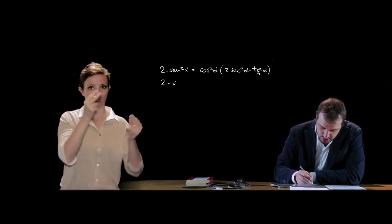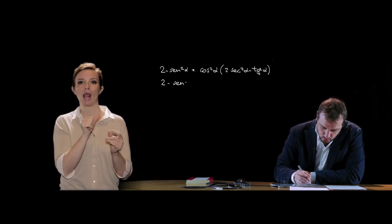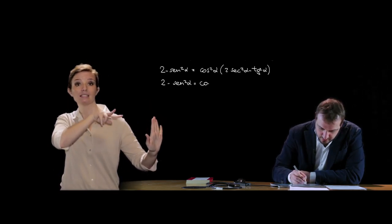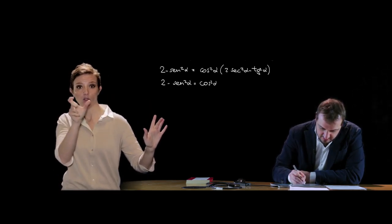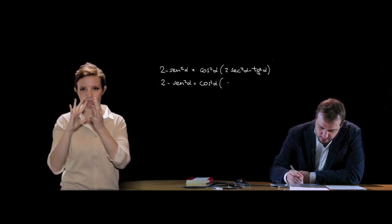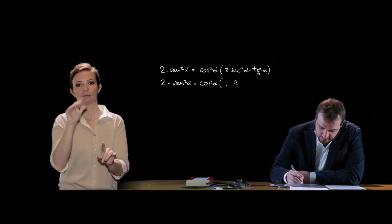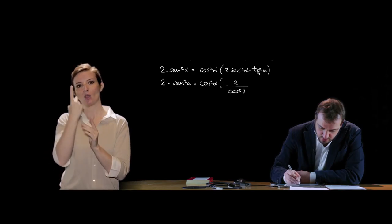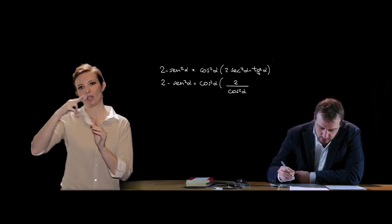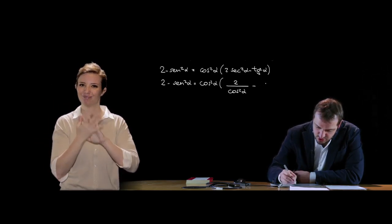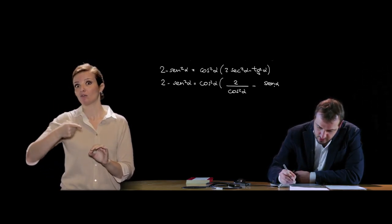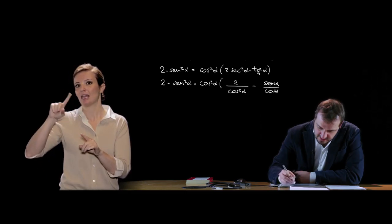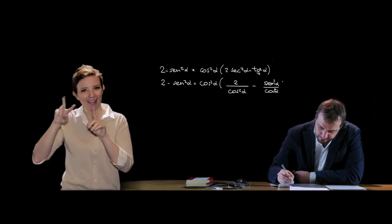Cerchiamo di lavorare su entrambi i membri. Il primo lo lasciamo come 2 − sen² α. Sul secondo possiamo effettuare delle trasformazioni: la secante sappiamo che è 1/cos², e la tangente è sen α/cos α, elevata al quadrato perché è tan².